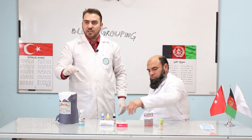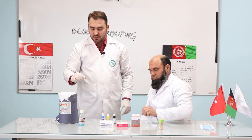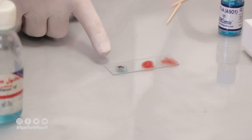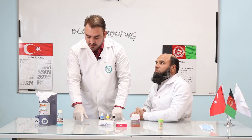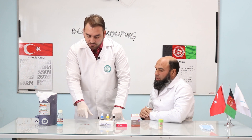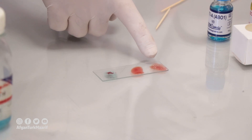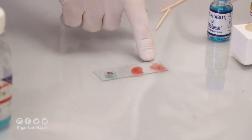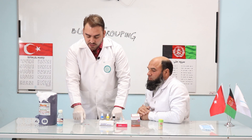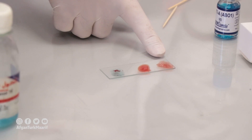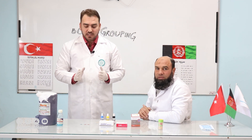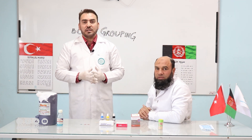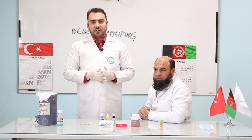Keep the sample for around two minutes. Now you can see that agglutination has taken place with antibody A and the Rhesus factor positive. So it means that this blood group is A positive. This was the experiment and we have detected that this blood group is A positive. Thank you for watching the video.